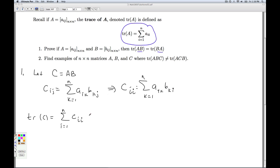That means that the trace is the sum from I equals 1 to N of the sum of K equals 1 to N, A_IK B_KI. So all I'm doing is substituting this for the C_II. So that gives me the trace of C.